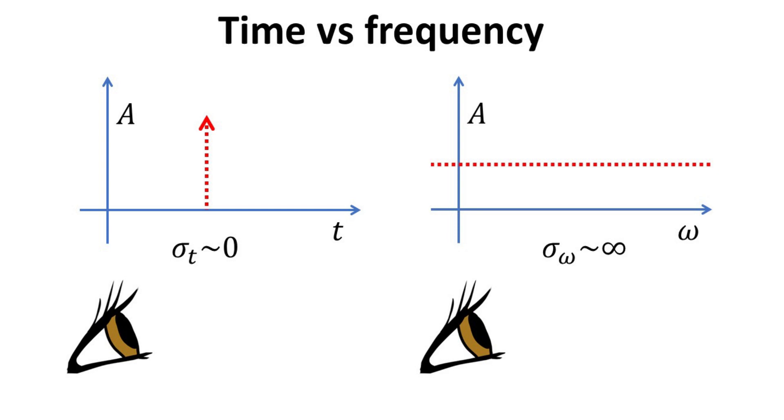We quantify the notion of spread by its standard deviation, herein denoted by σt and σω for time and frequency respectively.